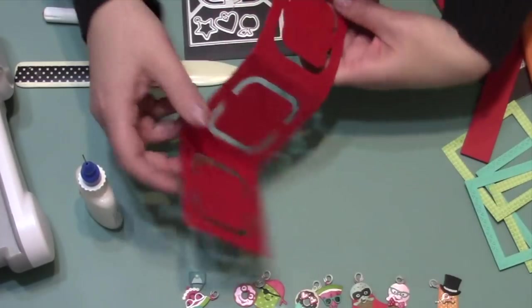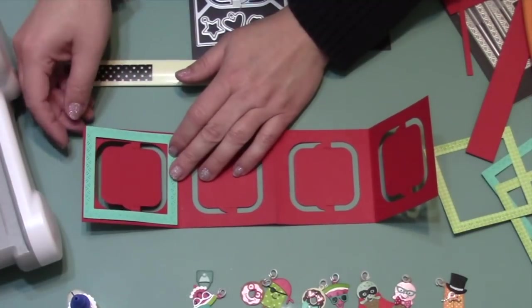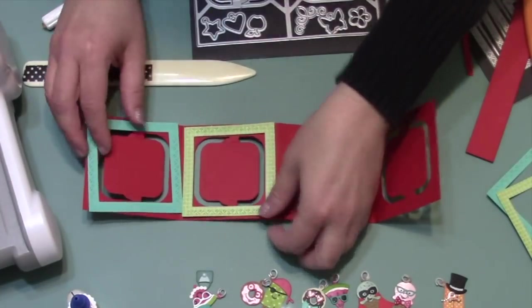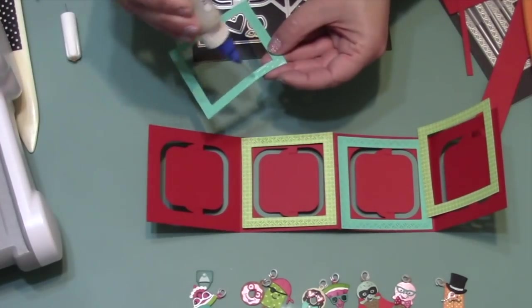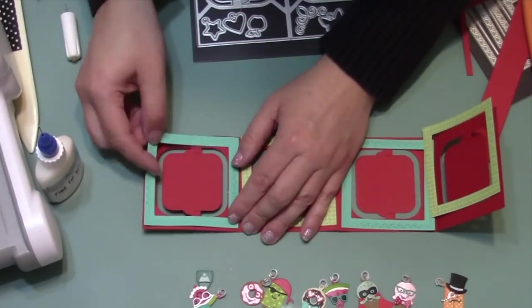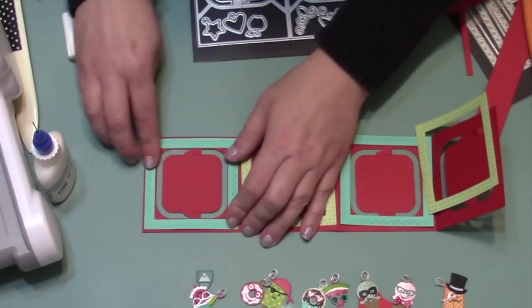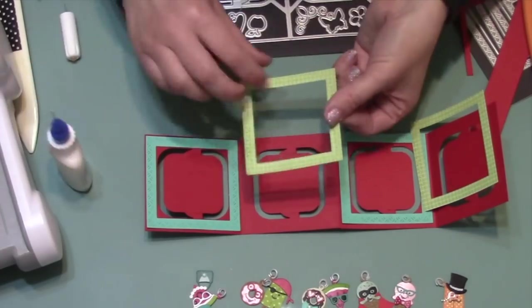For my interior decoration, I will add those square frames that I cut earlier, and it just so happens that they fit perfectly on the Charm Accordion. The best way to line them up is to look at the inner edge of the frame and just have a little bit of your base color showing. You'll see how easy it is to line those up.